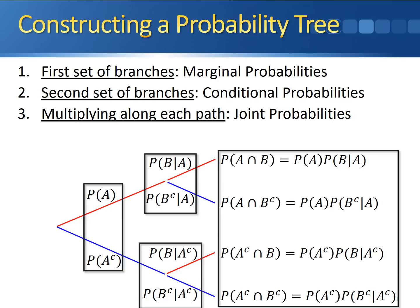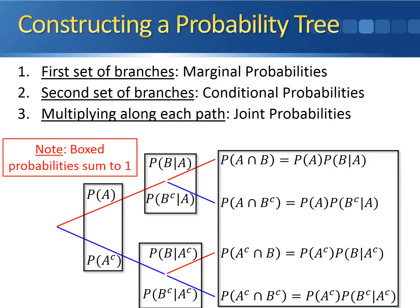These probabilities all sum to one. The sum of your marginal probabilities at the beginning — A and A complement — add up to one. Each set of conditional probabilities also adds up to one. And all four of your joint probabilities at the end of your probability tree add up to one as well.